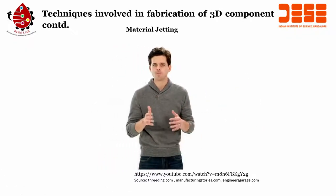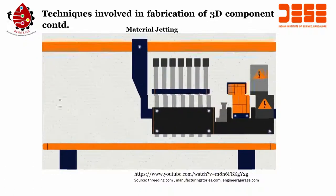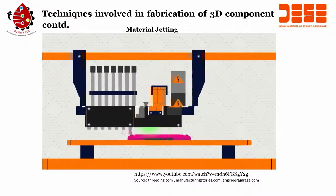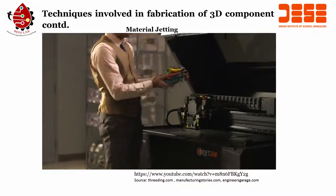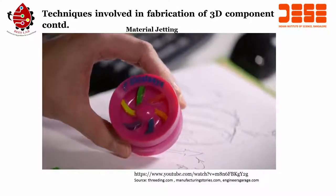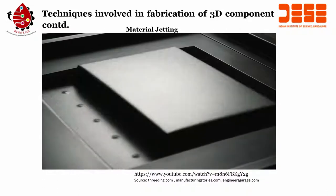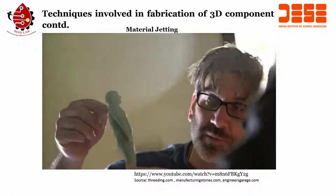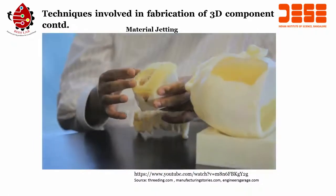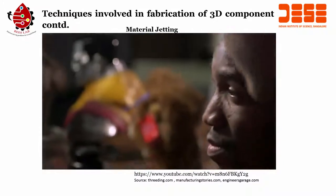PolyJet is a 3D printing method that makes beautiful, precise models in a huge variety of materials and colors. It works like an inkjet printer, but instead of jetting drops of ink, PolyJet 3D printers jet tiny droplets of liquid plastic. A UV light instantly cures the plastic, solidifying it, and layer by layer complex models take shape. The most advanced PolyJet systems can build multi-material parts — soft, rigid, clear, and colorful — and you can adjust material properties like heat resistance and durability. The same technology that makes gorgeous prototypes also makes precise manufacturing tools, helping designers, manufacturers, and researchers deliver better products faster and with less waste.